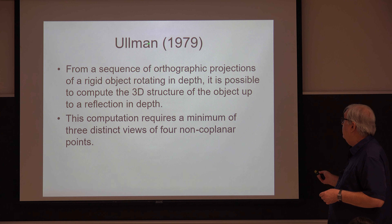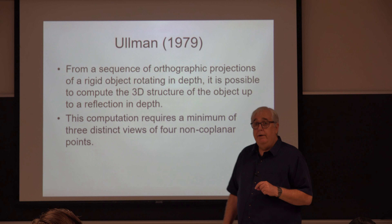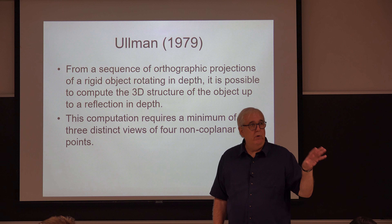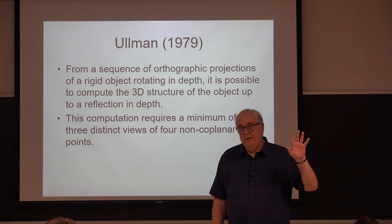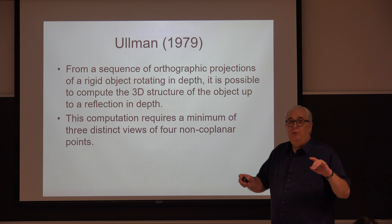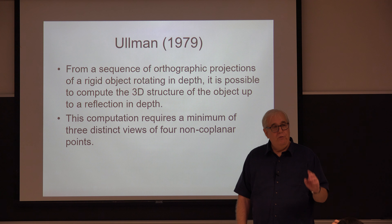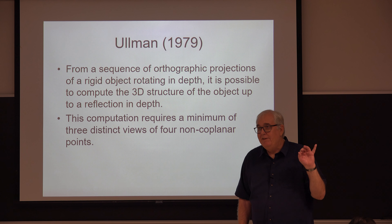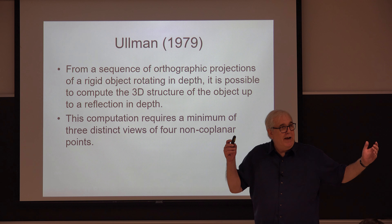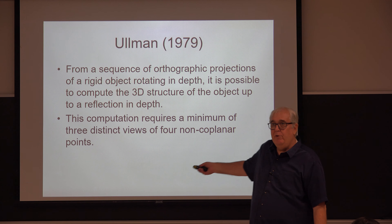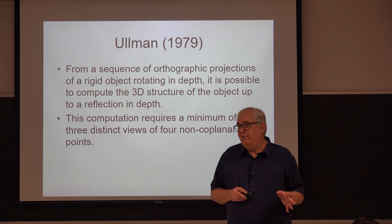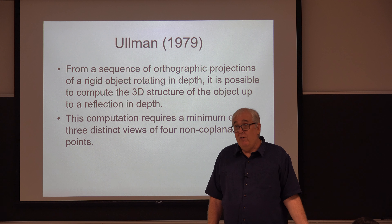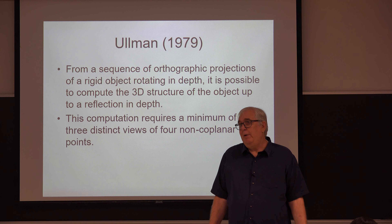This paper came out in 1979 and had a big impact on the field — lots of groups around the world said let's do empirical research on this. You can think about Ullman's model as an ideal observer model: it tells you the best you can do in principle. Assuming perfect image measurement and unlimited computational power, this is the absolute best performance possible — you can calculate the metric structure in just three views. But the general view at the time was that real people would be somewhat worse than that.